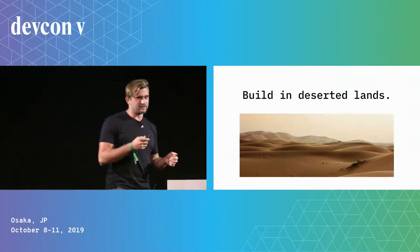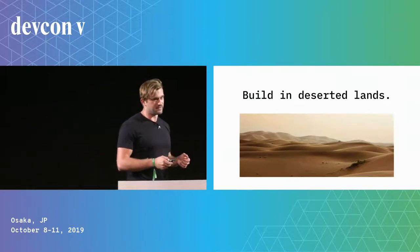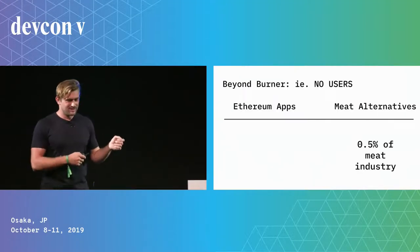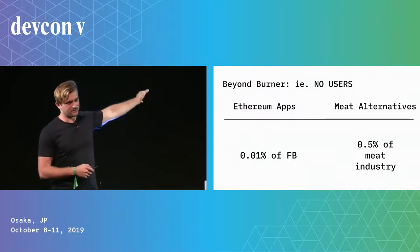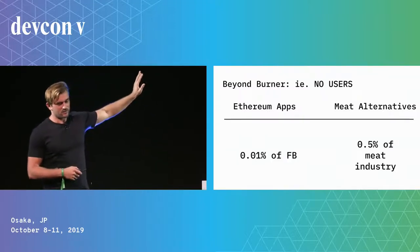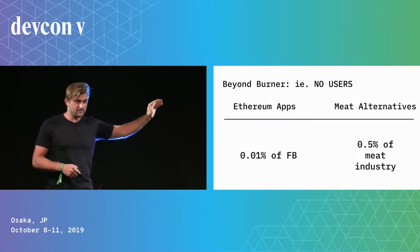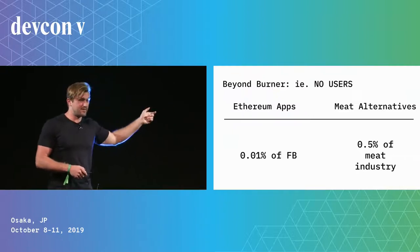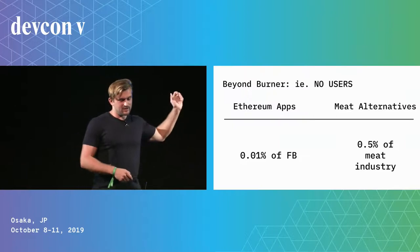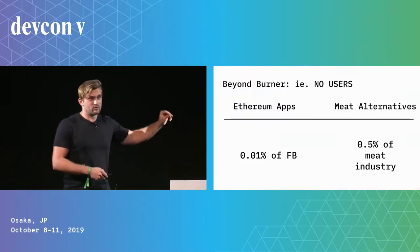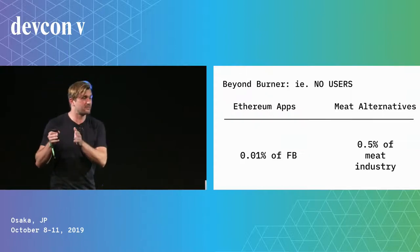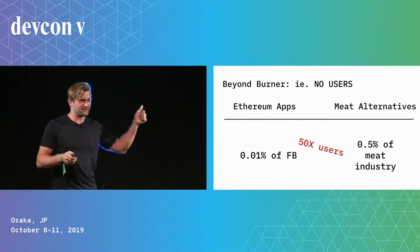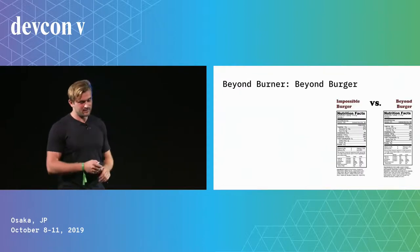On top of that, we're building somewhat in a desert — we don't have a lot of user data to pull from to make design decisions. To illustrate where we are: Ethereum has about 0.01% of the user base of Facebook, measured by daily or monthly active users on MetaMask versus Facebook's monthly actives. Meanwhile, meat alternatives have gained about half a percent of the meat industry market, which is pretty great. We need to 10x our user base to match what they've done.